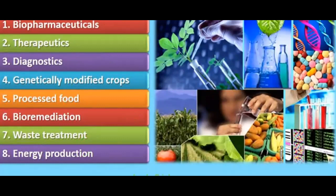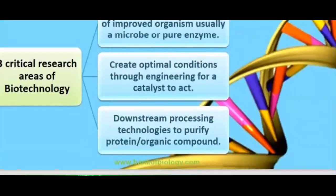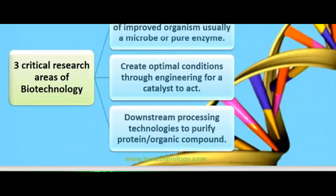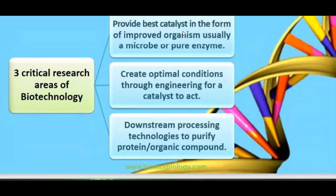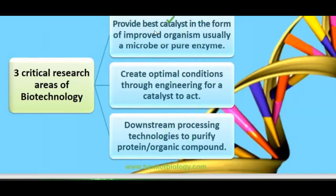Biotechnology is the technology in which biological organisms are used. There are three critical research areas of biotechnology: first, providing the best catalyst in the form of an improved organism, usually a microbe or pure enzyme; second, creating optimal conditions through engineering for a catalyst to act; and third, using downstream processing technology to purify the protein or organic compound.